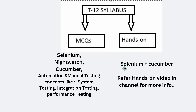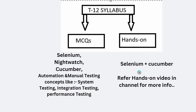For hands-on, we have three topics — Selenium, Cucumber, and Nightwatch — but Nightwatch is not being asked. They are only focusing on Selenium plus Cucumber complete end-to-end testing. Complete end-to-end testing means you have to write the Selenium code, write the feature file, link the feature file with the Selenium code, make changes on the runner file to run the script, and also generate a report. All hands-on related videos are available on this channel.